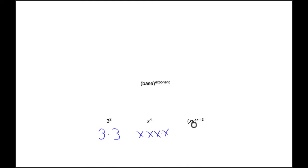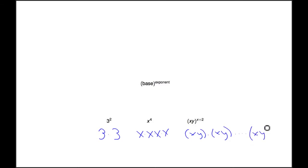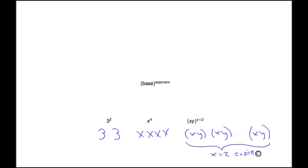And here we have something that looks a little different, although it's still the same. Here the base is xy, because all of that is in parentheses, and so all of that is being raised to the exponent x plus 2. So here we have xy times xy, and you keep going until you end up with x plus 2 copies. So this is what an exponent is — it's shorthand for multiplication.